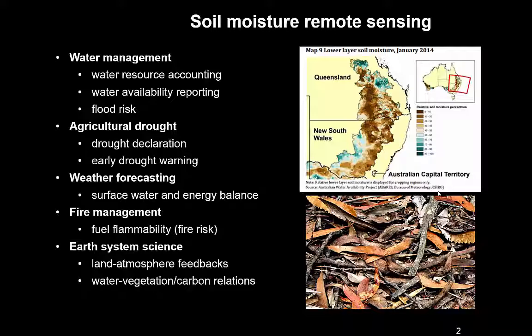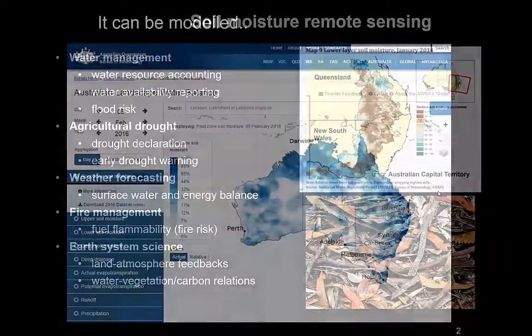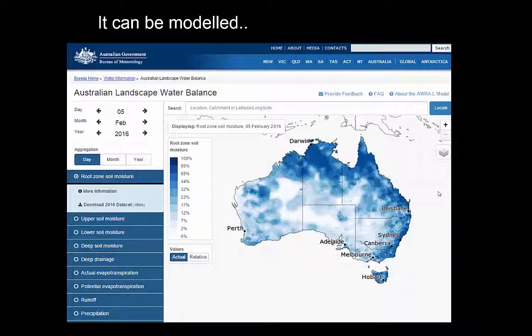Vegetation is part of it too — water affects vegetation and carbon relations in the carbon cycle. So there are lots of different applications. Of course, we can just model soil moisture, and indeed that is what the Bureau of Meteorology is currently doing. If you've got good rainfall information you can do a pretty good job at that. This is from the Bureau of Meteorology's website — the Australian Landscape Water Balance from the Australian Water Resources Assessment Model, which I had a role in developing.